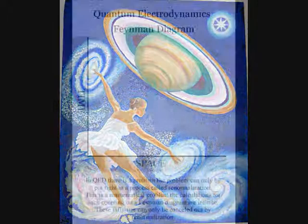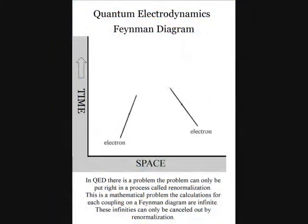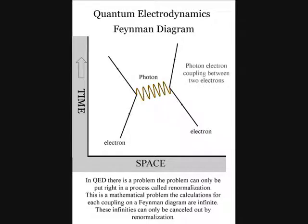In quantum electrodynamics there is a problem. The problem can only be put right in a process called renormalisation. This is a mathematical problem.